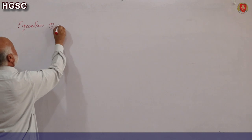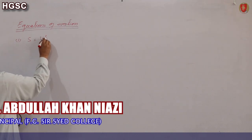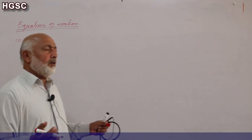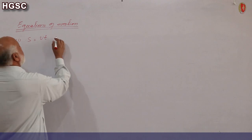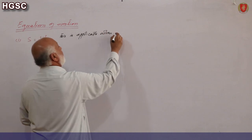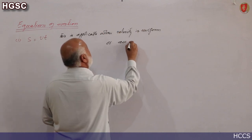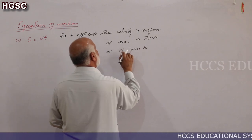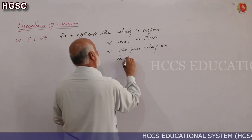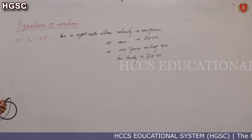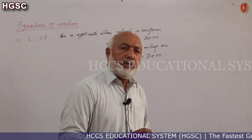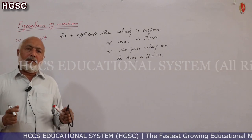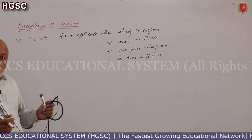Equation of motion number one: s is equal to vt. This equation is applicable when velocity is uniform, or acceleration is zero, or there is no net force acting on the body. Jab velocity uniform ho, velocity constant ho, tab s = vt se distance ya displacement solve kar lete hain.